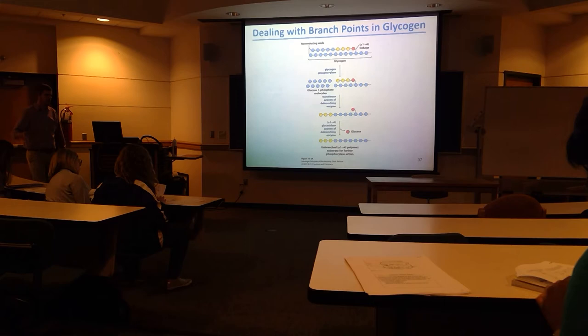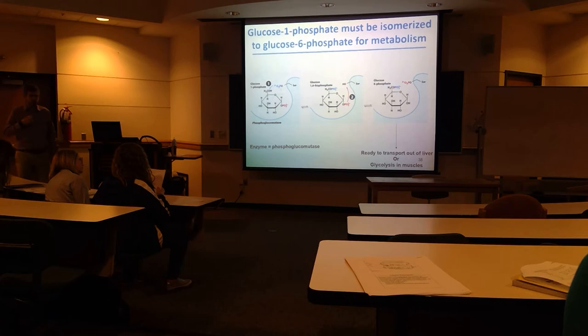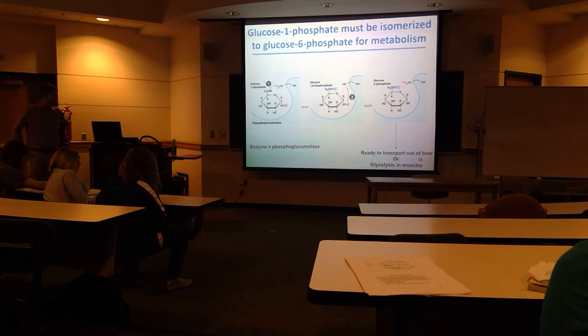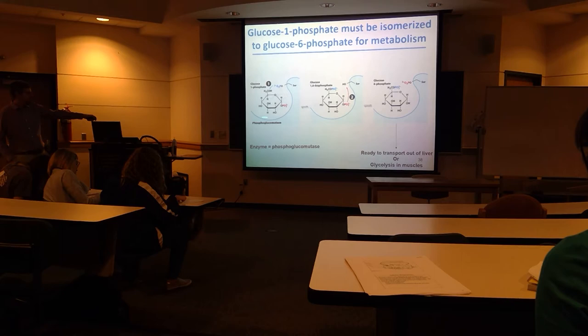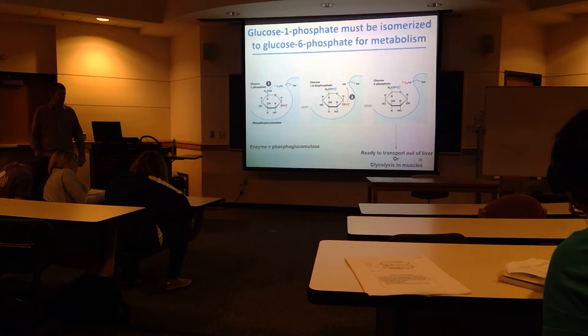Glucose-1-phosphate is not a form we've talked about before. We've talked about glucose-6-phosphate or plain glucose. So there's an enzyme that changes the position of that phosphate to give us glucose-6-phosphate, which is a much more usable form. This is done by phosphoglucomutase.